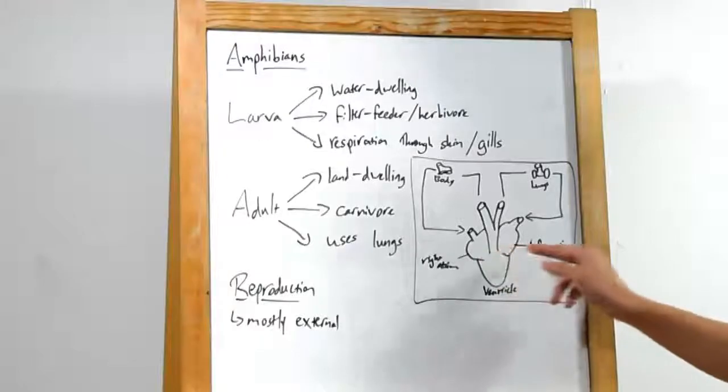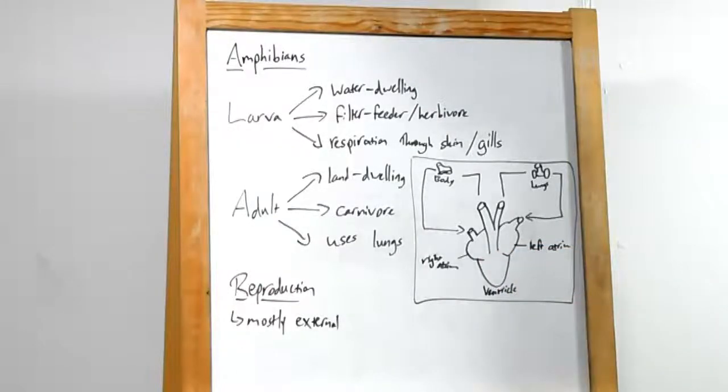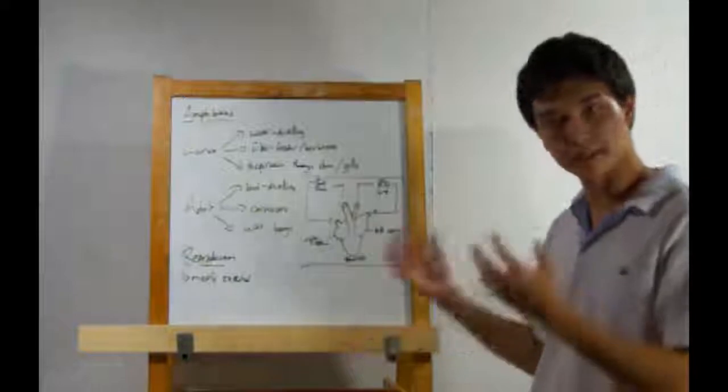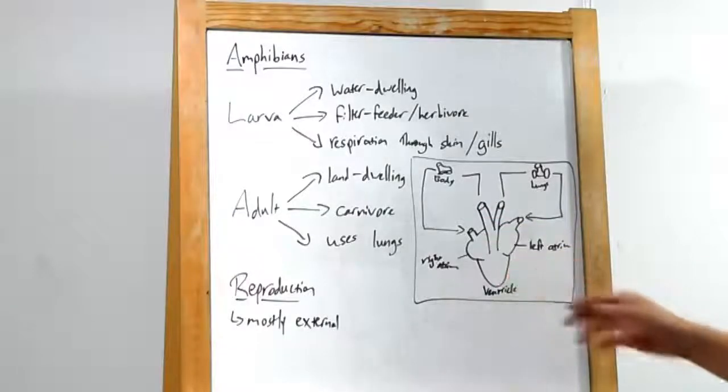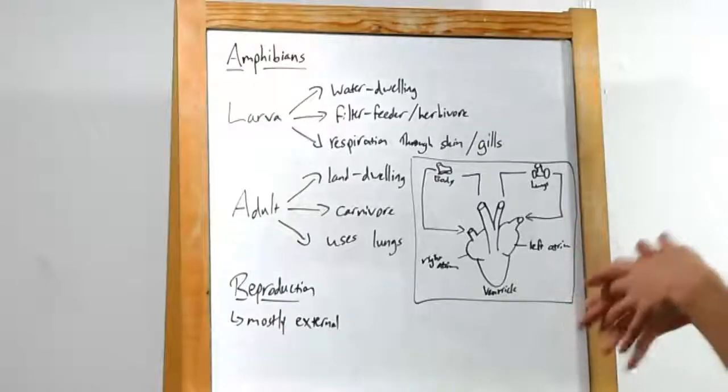Alright, the heart has a right atrium, a left atrium, and a ventricle. How does this all work? Well, the right atrium is where oxygen-poor blood comes in. It'll come in and then enter the ventricle. The ventricle has become kind of this common ground.